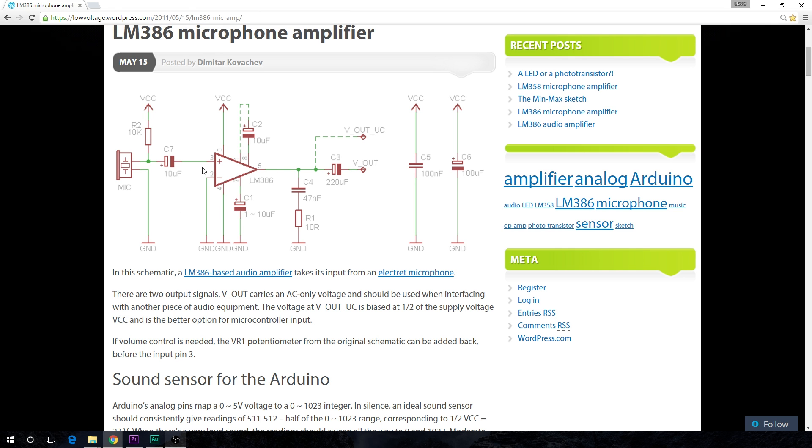So you'll see that it's all laid out here. I can't pretend to know all about the LM386. It's not something I've ever really used before and microphones either actually. I've never really picked them up and used them. But this is a really nice little article to go through and you'll see that it says we've got the V-out carries AC only voltage and should be used when you've got another piece of audio equipment. And the V-out underscore UC is biased to half of the supply voltage.